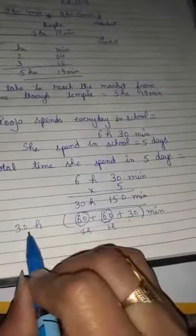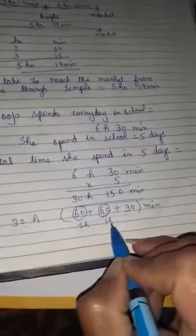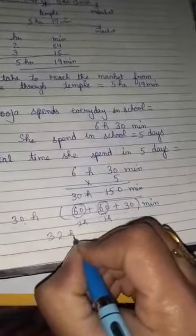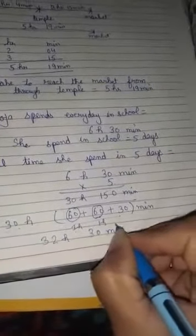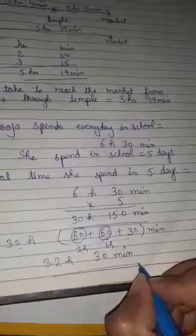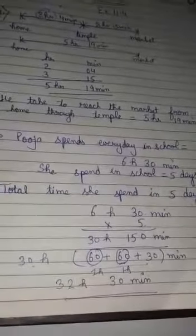Then 30 hours plus these 2 hours equals 32 hours. Then 30 minutes. That is our answer: 32 hours 30 minutes.